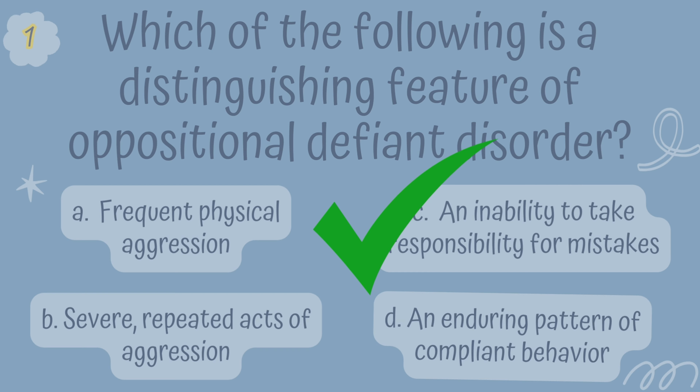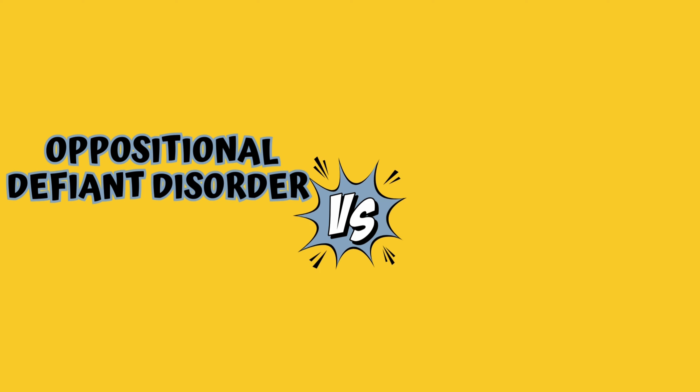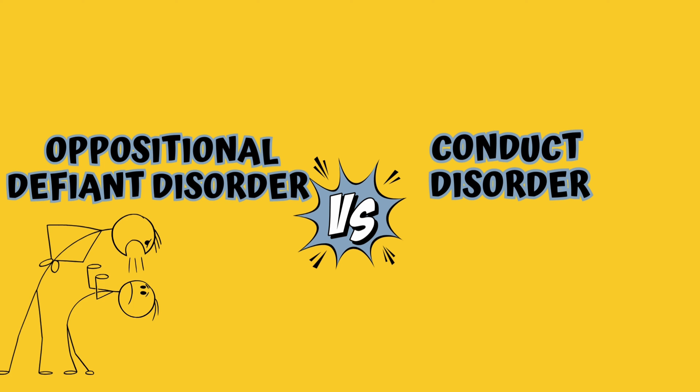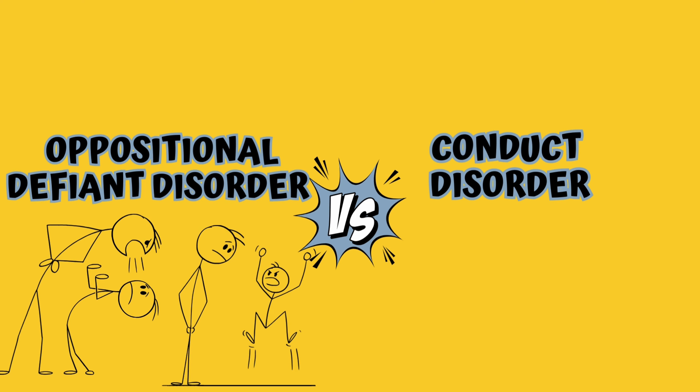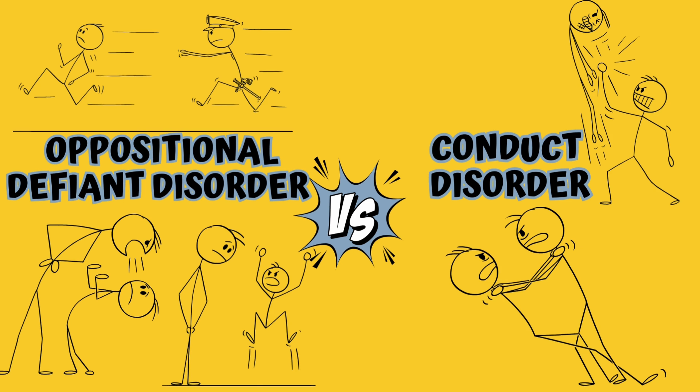Now let's examine why the other options are incorrect. Option A, Frequent Physical Aggression, describes a characteristic more commonly associated with Conduct Disorder rather than ODD. While children with ODD may display hostility and defiance, they typically do not engage in severe physical aggression.